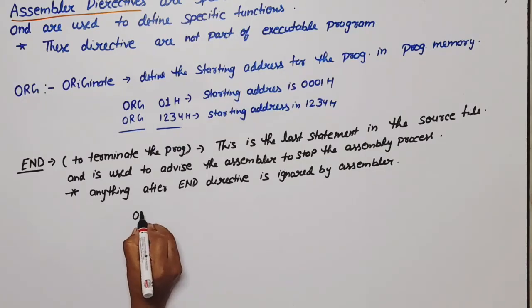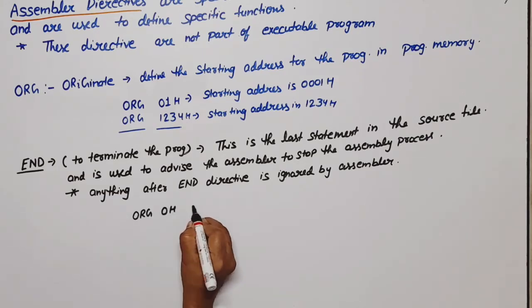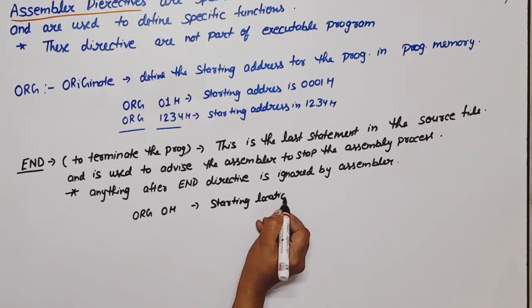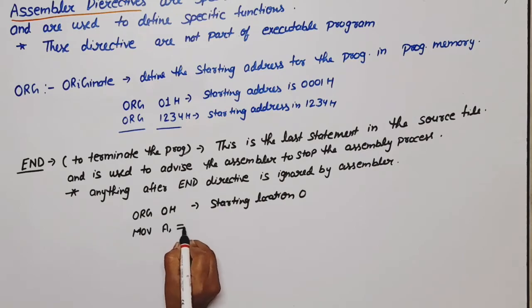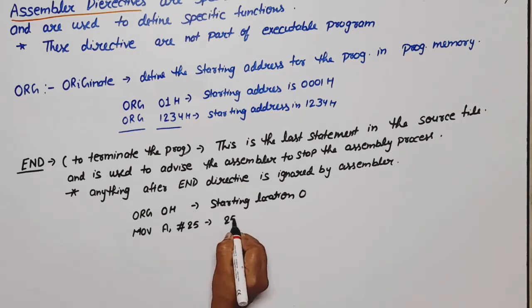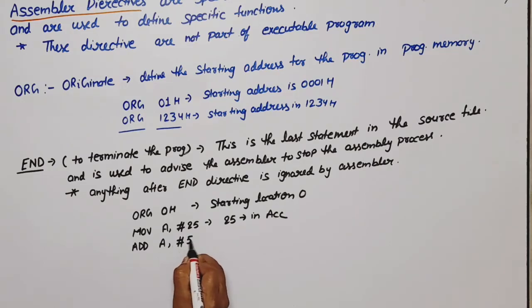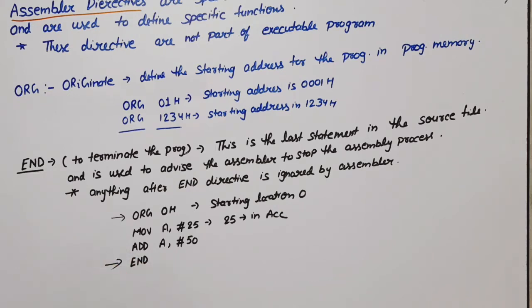For example, let's take a program. We have written ORG 0H, meaning the starting address is 0. Then I have used the instruction MOVE A, #25 — so 25 will be loaded into the accumulator. Then ADD A, 50 — meaning the accumulator value has 50 added. After that, if I have written END, it will stop and terminate. This is the use of the END assembler directive.